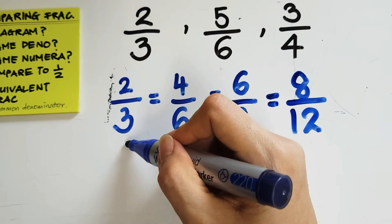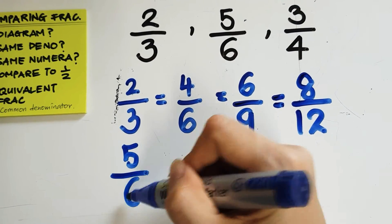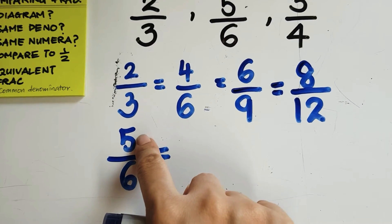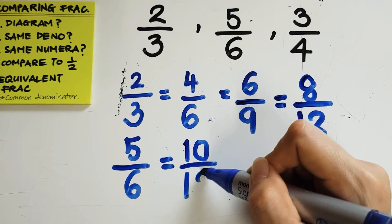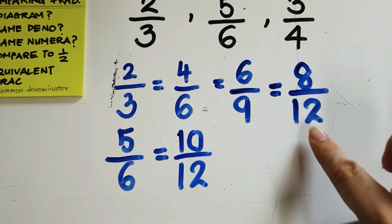Now, let's work with 5/6. I'm going to list down all the equivalent of 5/6. The first one being times 2 times 2, 10/12. Yep, I'm going to stop here because you see I have 12.